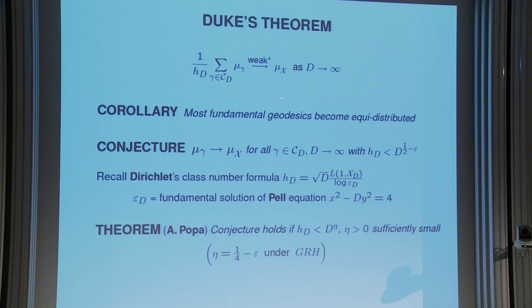Duke's theorem tells us that, properly normalized, if we look at the measures — the arc measures on these geodesics — and we average them over the class group, then as d goes to infinity, this converges weak-star to the natural measure on the unit tangent space. This is Duke's theorem.